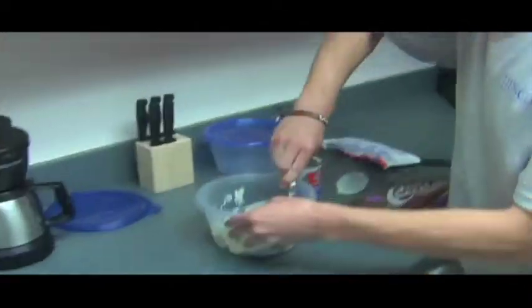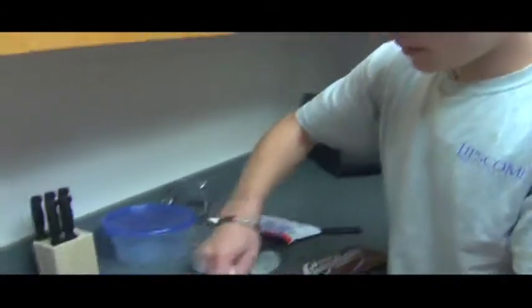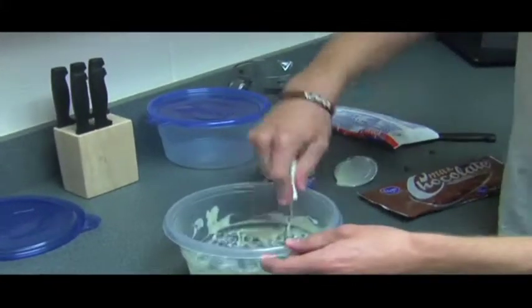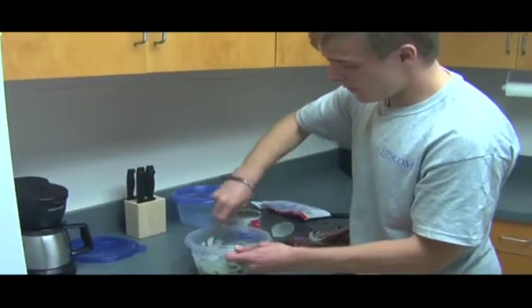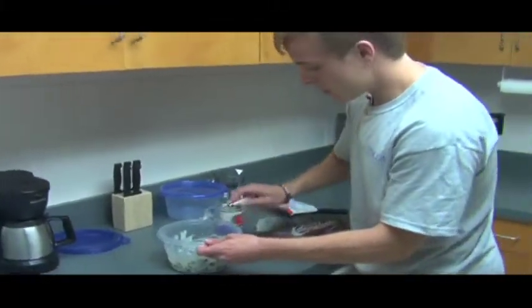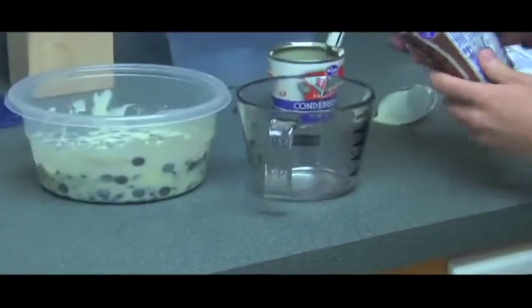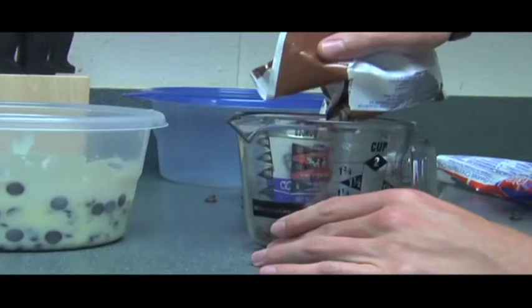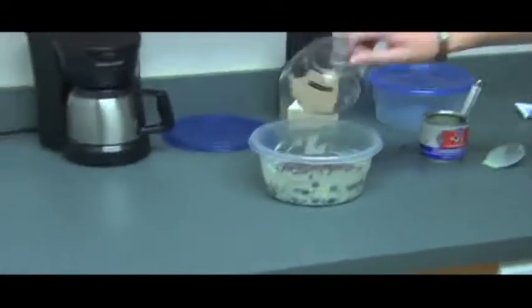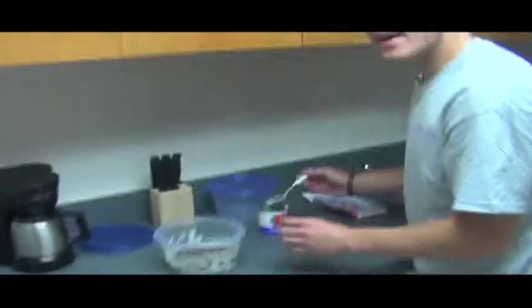And one thing you can do, depending on the kind of fudge that you like, if you want to get a little bit creamier, sweeter, this is what we have these milk chocolate chip morsels for. So if you want milk chocolate, pour about a half cup, or if you want more, it doesn't really matter. Just go ahead and pour that in. A little bit creamier texture and a little bit sweeter taste.